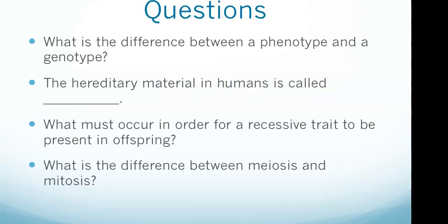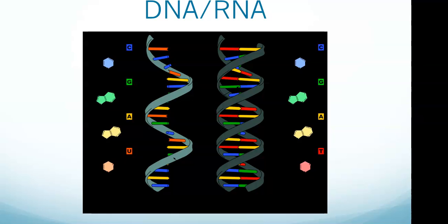Looks like we got four questions to consider as we're going through this video. The difference between phenotype and genotype, that's definitely important for your exam. What is the hereditary material in humans called? What must occur in order for a recessive trait to be present in offspring? And the difference between meiosis and mitosis.